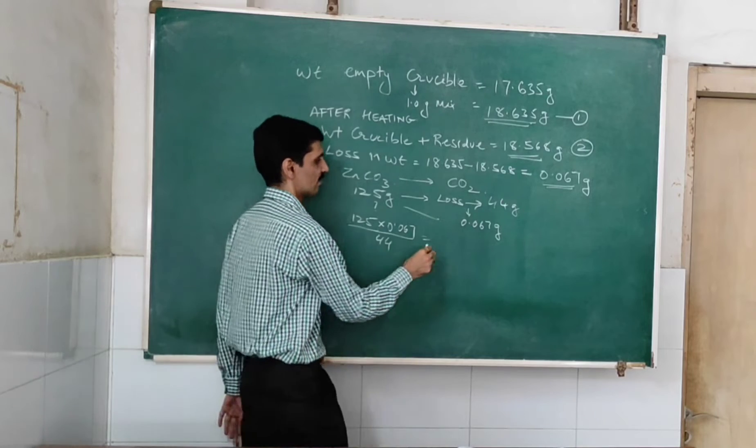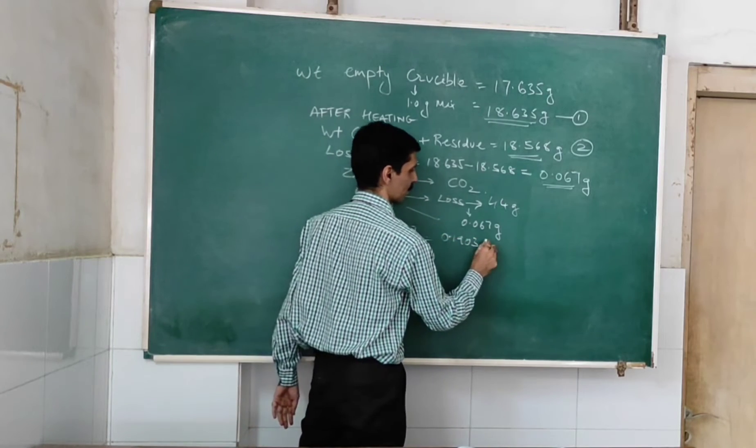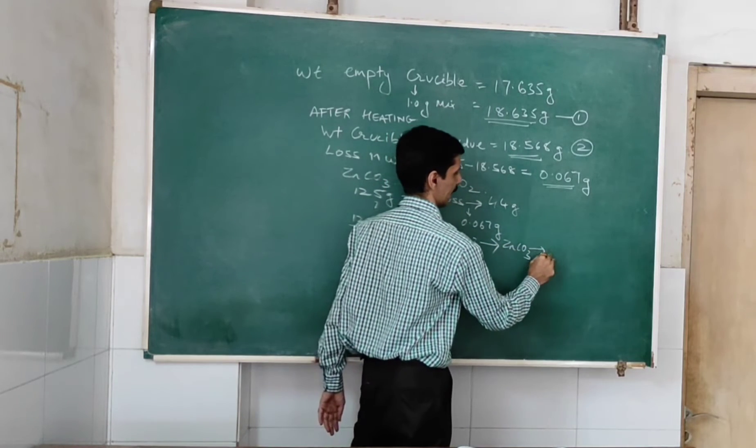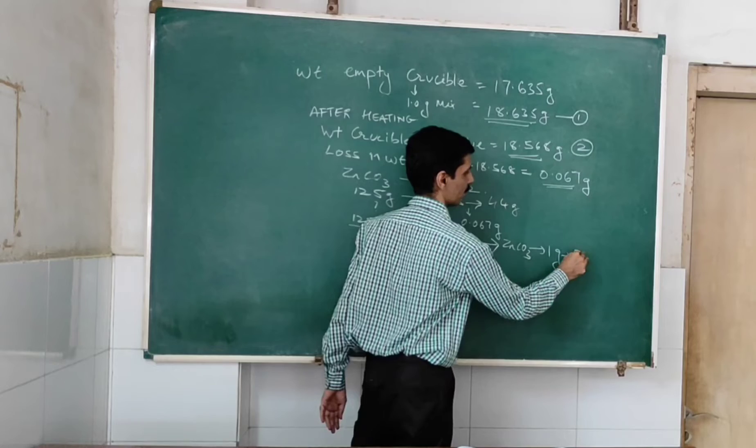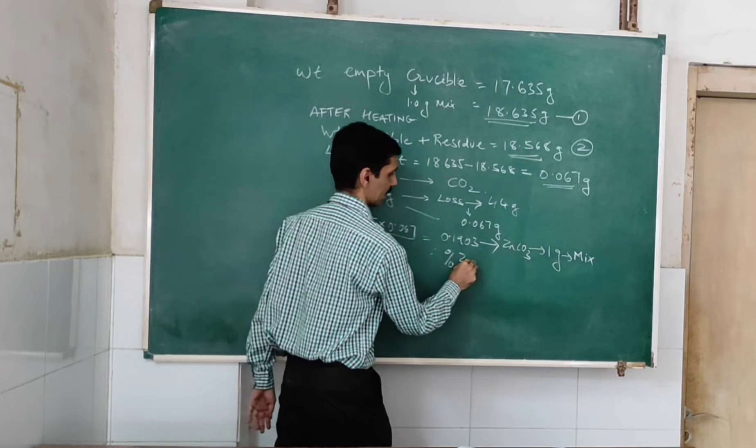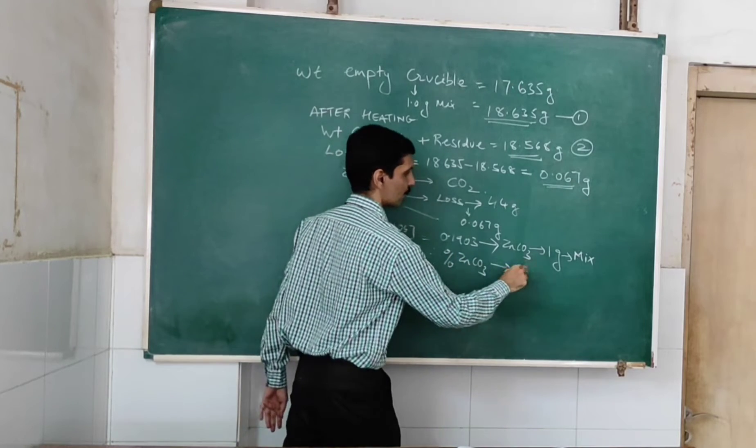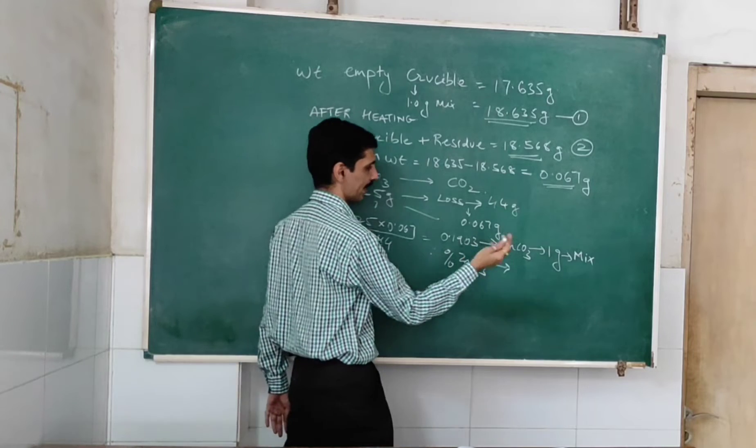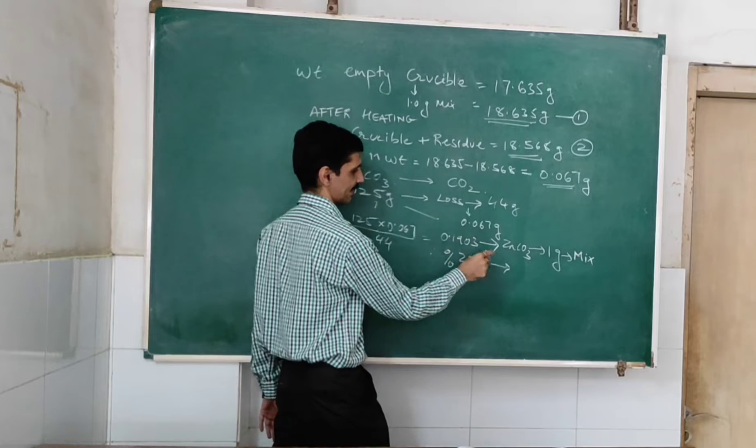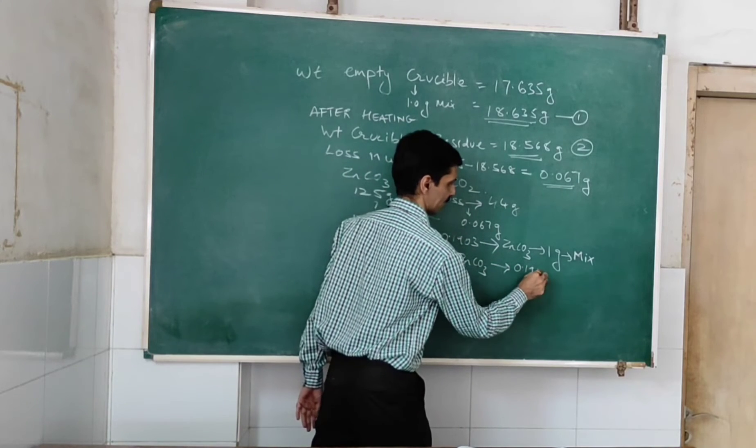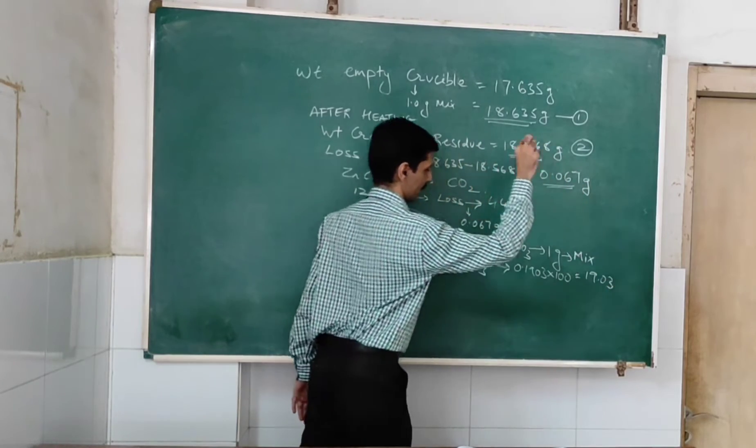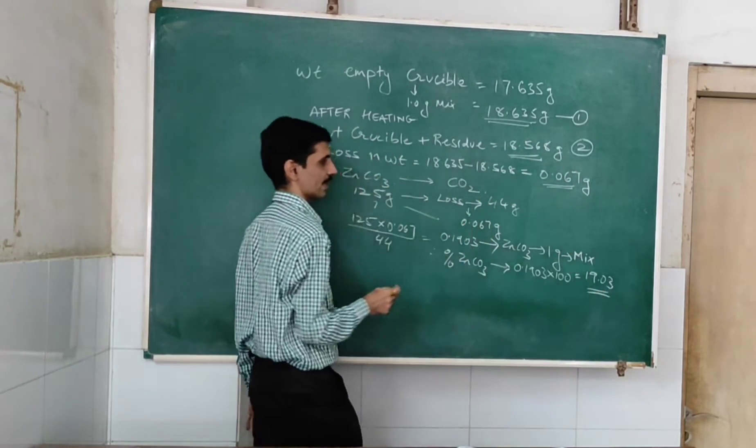This is my dear friends, zinc carbonate present in one gram of the mixture that we have taken. So therefore, the percentage of zinc carbonate, for one gram it is 0.1903. So for 100, because percentage is 100, so that means 0.1903 into 100. So that is going to give you 19.03. So this will be the percentage of zinc carbonate.